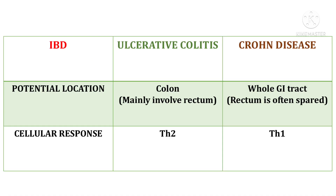First we will talk about the potential location. Ulcerative colitis, as the name suggests — colitis — it involves the colon and mainly involves the rectum. Whereas Crohn's disease involves the whole of the GI tract, and in most patients the rectum is often spared in Crohn's disease.